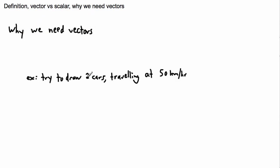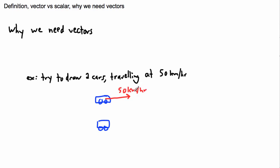Let me try to draw two cars traveling at 50 kilometers per hour. I'm a lousy artist so I'll just draw a box for a car. For the first car, how can I represent its speed of 50 kilometers per hour? A lot of people draw an arrow and label it 50 kilometers per hour. Then this other car is also going 50 kilometers per hour.